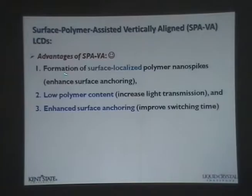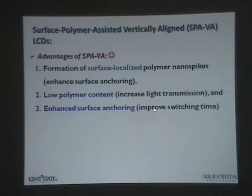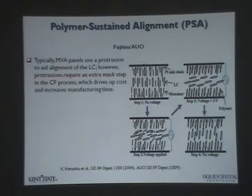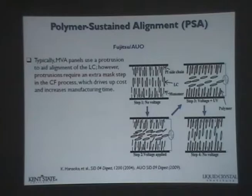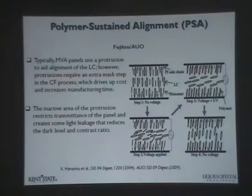In order to assist this, there are multiple ways to do it. Since we are interested in materials that assist this alignment, we form this surface-localized polymer spike. With low polymer content, we can increase light transmission. But once you increase this polymer concentration in the mixture, it causes some light scattering. We can also enhance the surface anchoring. AUO also showed similar work recently — they were saying that possibly they can form this polymer network when applying electric fields, in order to create multiple domain structures.